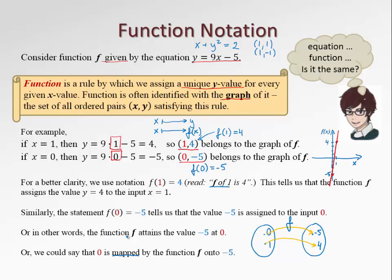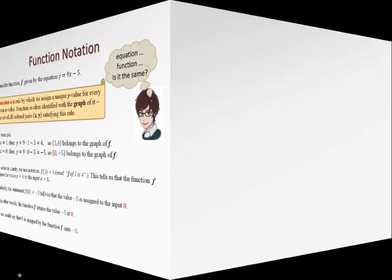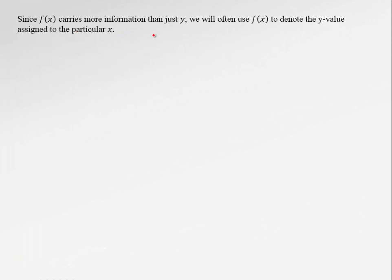So as you see, the words like function or mapping, they are actually the same. And function notation is used just to carry a little bit more information. We know exactly which y is assigned to which x. And we can refer to it with better clarity. For example, if I want to refer to a y that was assigned to a point 2 by our function f, I can just say I'm thinking of a point f(2), even though I'm not sure how much is f(2). I know that I'm talking about the value of the function f at the point 2. So, since f(x) carries more information than just y, we're going to use f(x) to denote the y value that is assigned to a particular x.